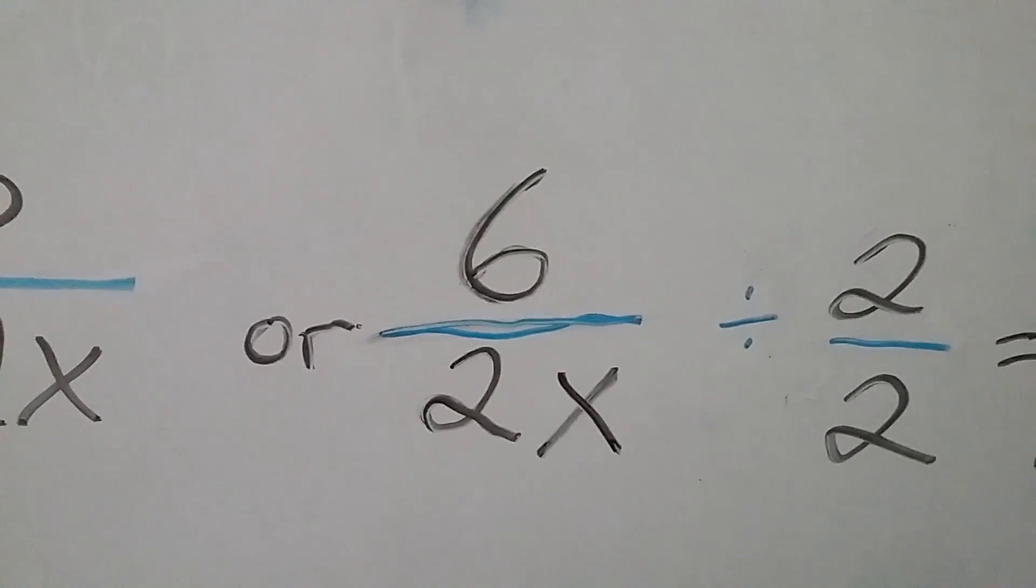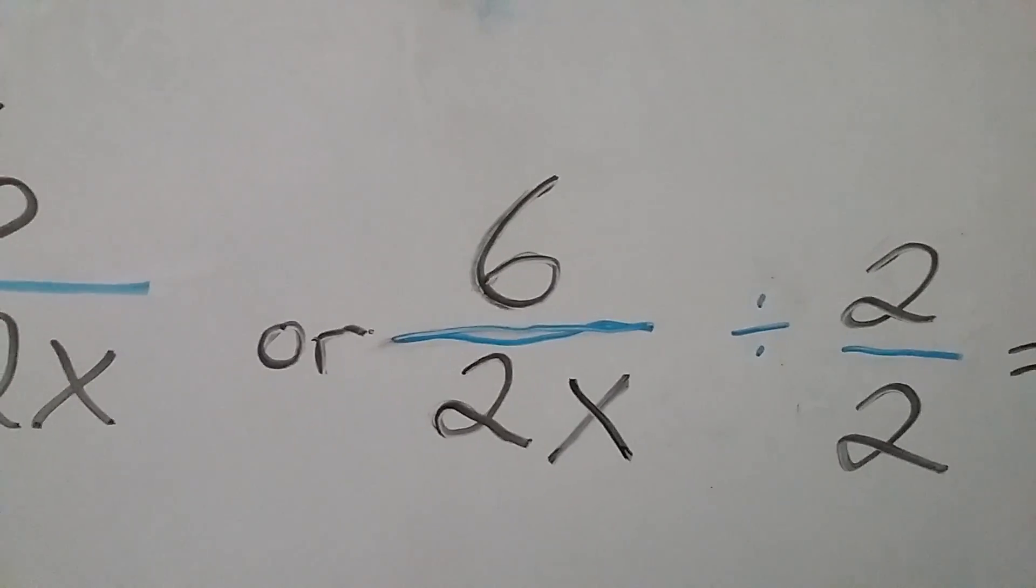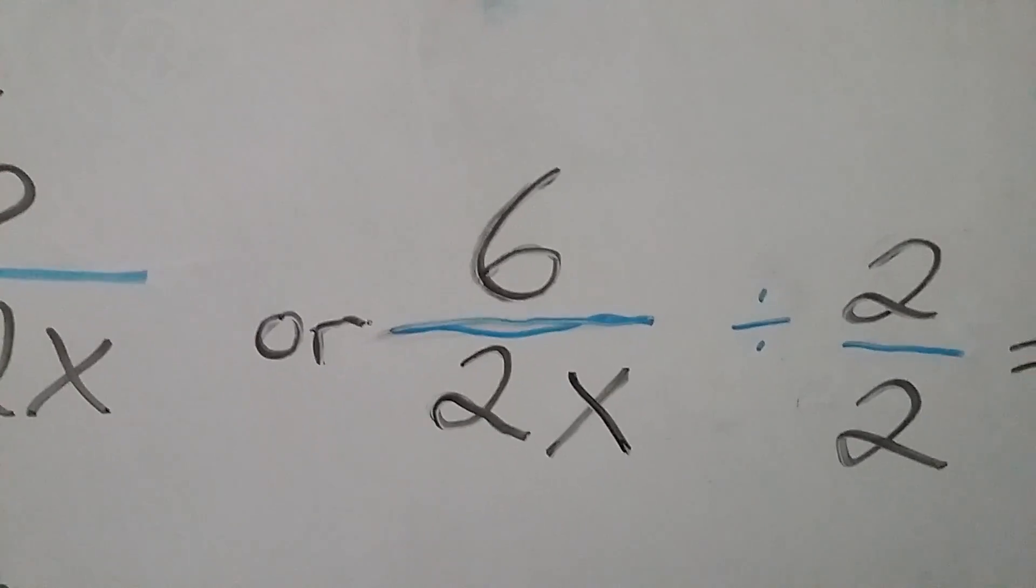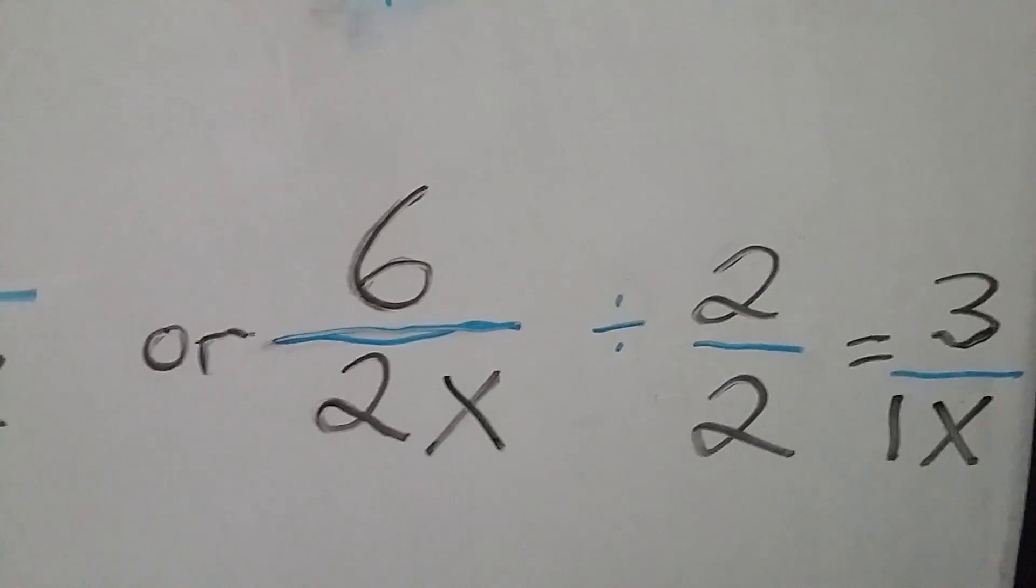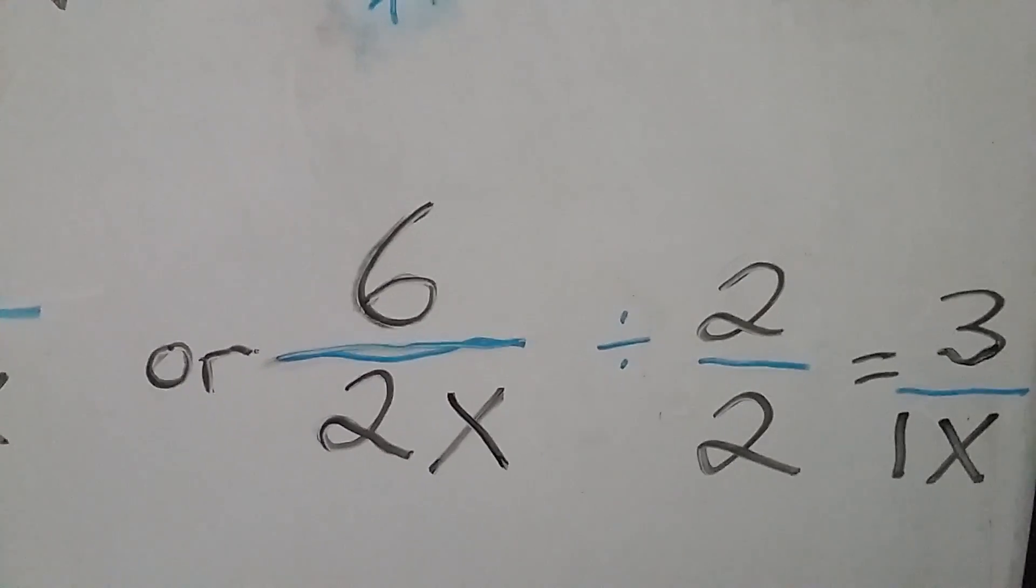Okay, so we take the 6 and we go across to the 2. We divide 6 by 2, and we get 3. And we divide 2x by 2, and we get 1x.